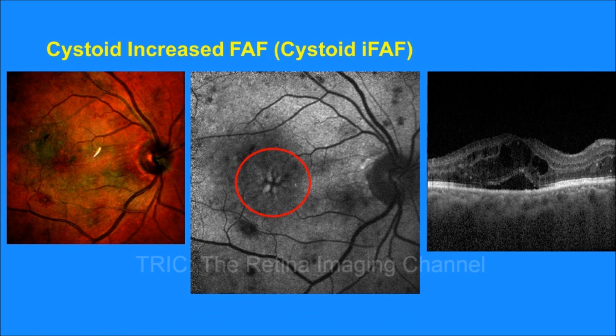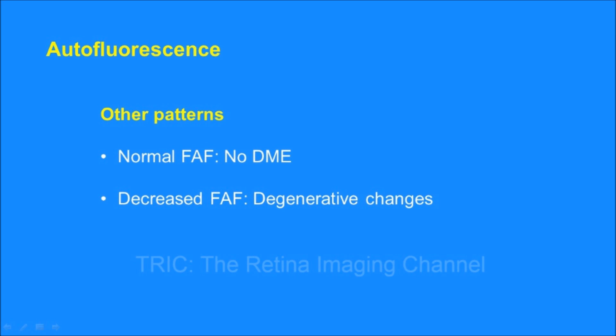In the next set of images too, we can see the cystoid IFF, or cystoid increased autofluorescence, at the fovea, which corresponds to the cysts noted on the OCT. The increase in autofluorescence at the fovea may not always have a petaloid appearance; there can be a spot increase, or spot hyperautofluorescence, at the fovea too, which is called spot IFF.